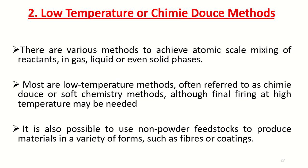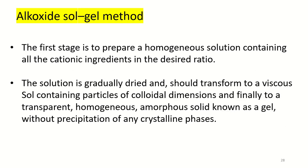Next, some chimie douce methods and their applications are going to be discussed. The first one is the alkoxide sol-gel method. The first stage is to prepare a homogeneous solution containing all the cationic ingredients in the desired ratio. The solution is gradually dried and, depending on the species present, should transform to a viscous sol containing particles of colloidal dimensions, and finally to a transparent homogeneous amorphous solid known as a gel, without precipitation of any crystalline phases.